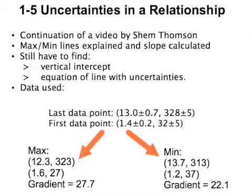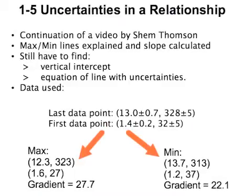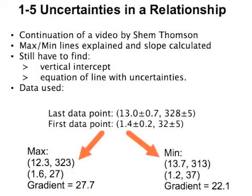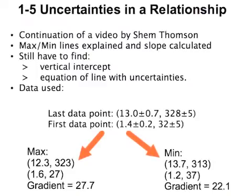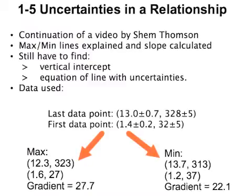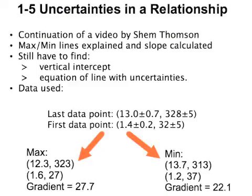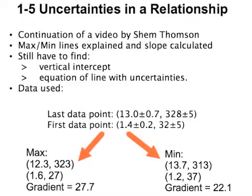This video is a continuation of a video by Shem Thompson, in which he explains the concept of maximum-minimum lines as a means to determining the uncertainties in a relationship. Shem leaves you with a maximum gradient and a minimum gradient, as shown at the bottom of the screen.